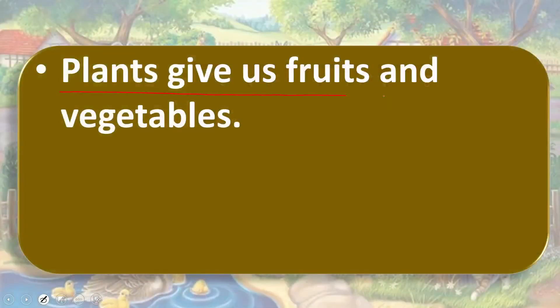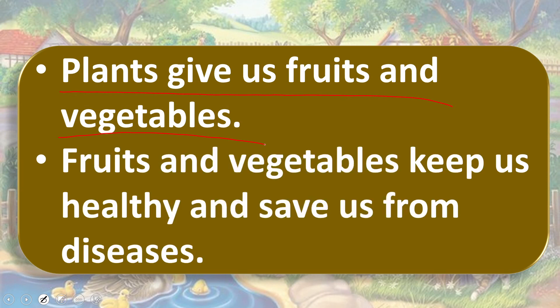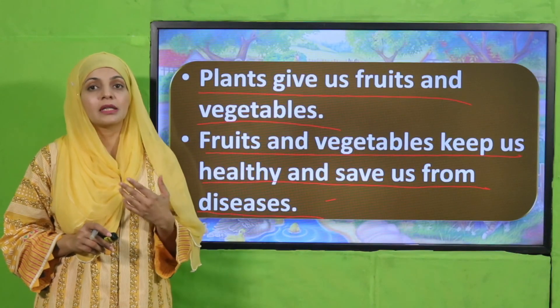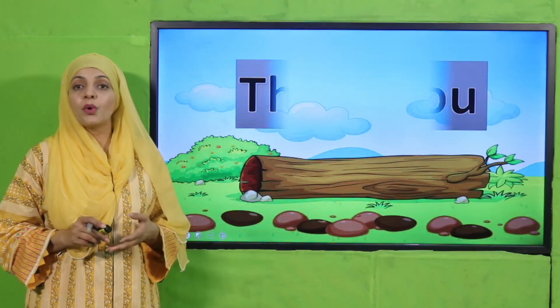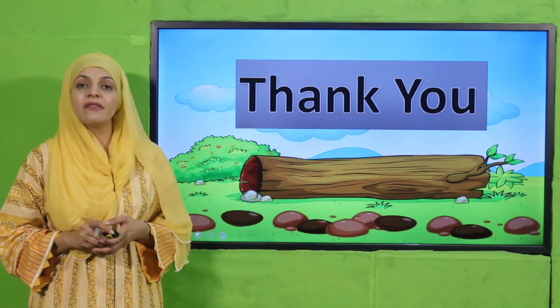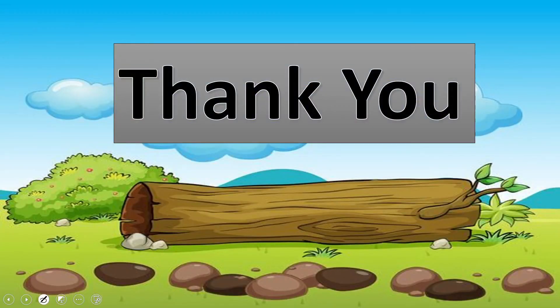Now is the time for wrap up. Today we have learned that plants give us fruits and vegetables. Fruits and vegetables keep us healthy and save us from diseases. Plants provide us fruits, vegetables, shade, and shelter — they are very beneficial for us, they protect us from diseases and keep us healthy. I hope you have enjoyed today's lecture. Keep everybody around you safe, have a good day, thank you so much, and Allah Hafiz.